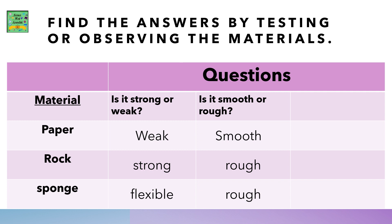Find the answers by testing or observing the materials. Question: material - paper, rock, sponge. Is it strong or weak? Is it smooth or rough? Paper is weak and smooth. Rock is strong and rough. Sponge is flexible and rough.